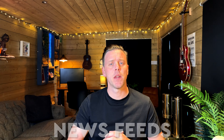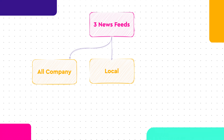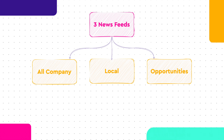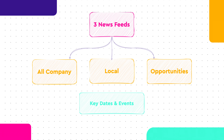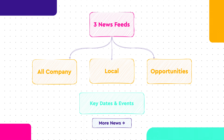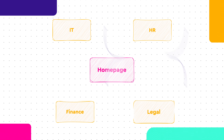They also want a section for news happening across the company — three feeds specifically: one for all-company corporate news, one for local targeted news, and a third for new roles and opportunities. They want a section for upcoming key dates and events, plus a link to a news archive. Then they want to promote core services — IT, HR, finance, legal — each of which has a site on the intranet.